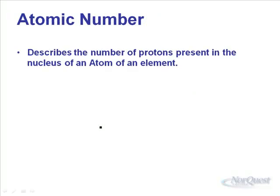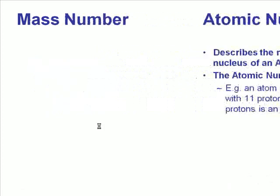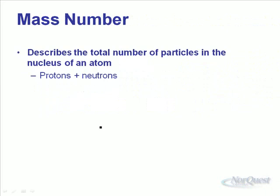The atomic number describes the number of protons in the nucleus of an element — each element has a unique atomic number. An atom with 10 protons is neon, 11 protons is sodium, 51 protons is antimony. The mass number, on the other hand, is the sum of protons and neutrons — the total number of particles in the nucleus.